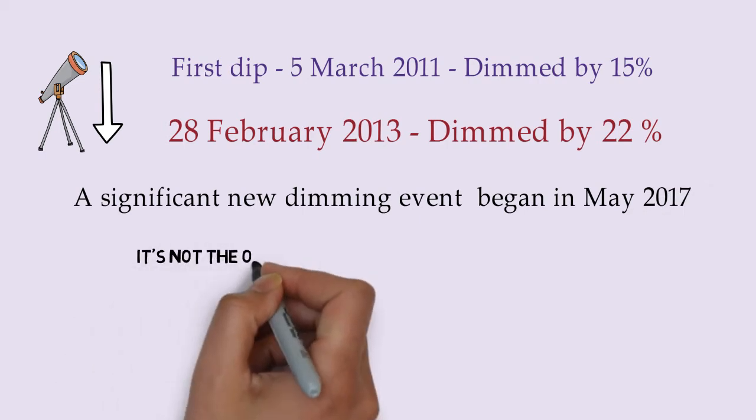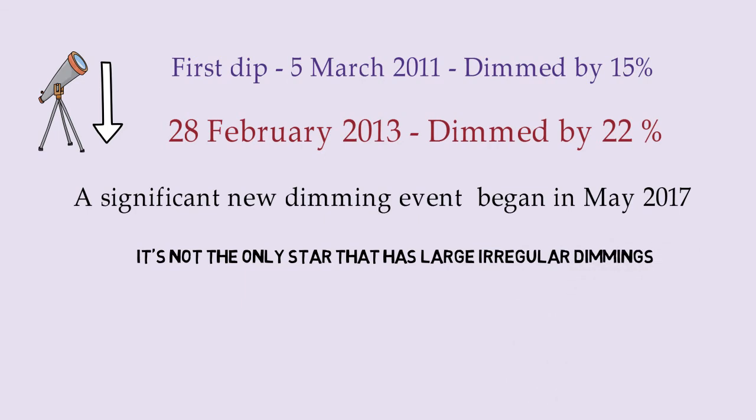However, it's not the only star that has large irregular dimmings. Another star by the name EPIC 204278916 also has some unusual light fluctuations.